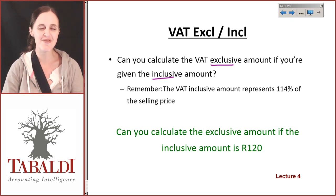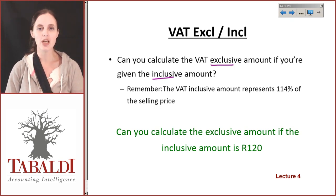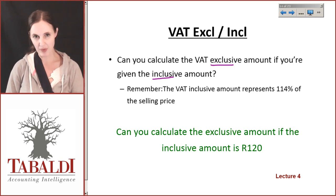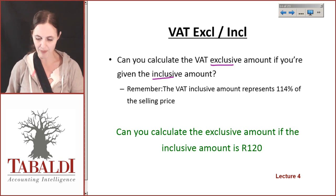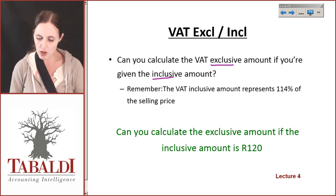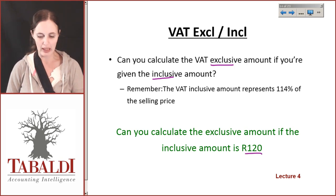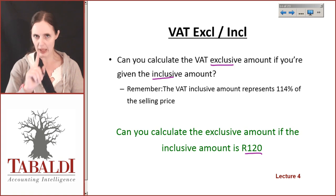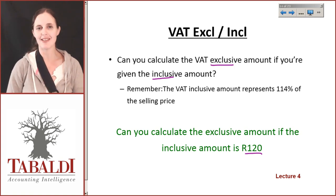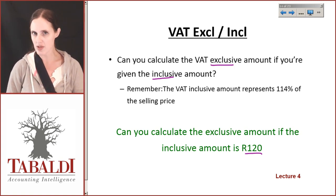It's a very different calculation and we've got to make sure that we understand how to do that — it is quite complicated, it's not quite as simple. So pay very close attention. Can you calculate the exclusive amount if the inclusive amount is 120? Most students say yes, of course — I go 120 times 14% — but if you calculate that you'll find out that is not actually true.